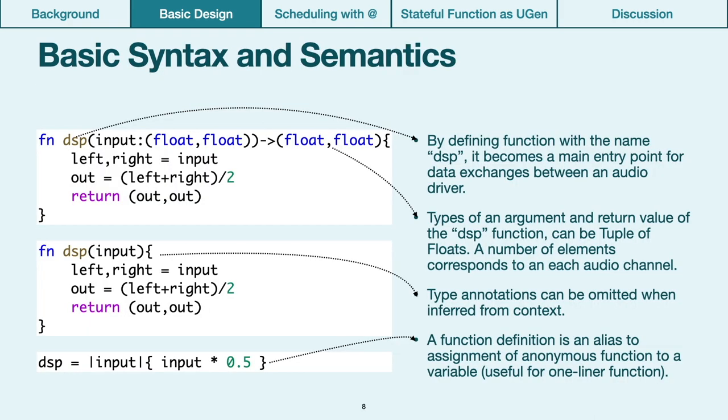Here we show the simplest example of the use of Mimium language. First of all, by defining a function with the name DSP, the user can send and receive audio data between audio driver. At that time, data type of argument and return value of DSP function is important. Both of the data types must be the tuple type that consists of any number of float type. In the example, the DSP function takes two audio channels and mixes them, and assigns mixed signal to both of the two channel outputs. In the first example, data types are explicitly annotated, but they can be omitted when inferred from context because the compiler has the Hindley-Milner type inference, like the second example.